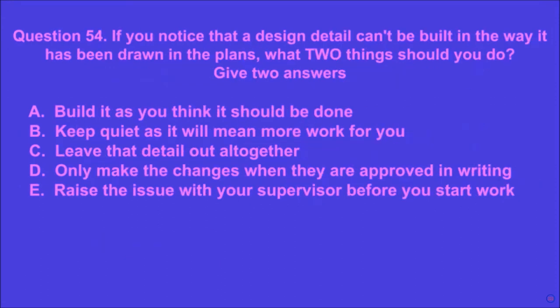Question 54: If you notice that a design detail can't be built in the way it has been drawn in the plans, what two things should you do? Give two answers. A: build it as you think it should be done, B: keep quiet as it will mean more work, C: leave that detail out altogether, D: only make the changes when they are approved in writing, E: raise the issue with your supervisor before you start work. D and E are the correct answers.